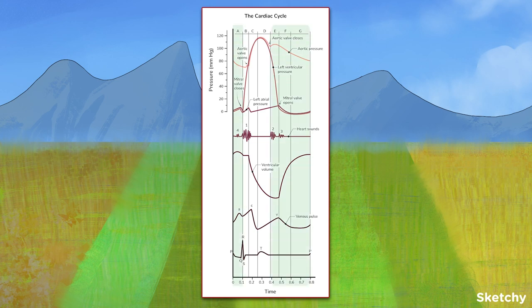Diastole, the period of time during which the ventricles are relaxing, and systole, the period during which the ventricles are contracting. These can be further subdivided into seven distinct phases, which we will walk through one at a time while looking at various changing parameters.